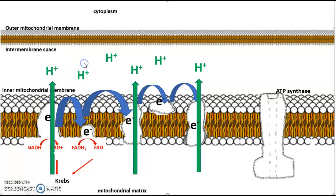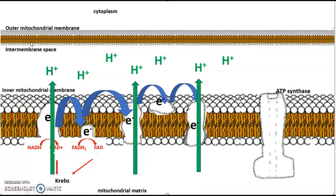With multiple glucose molecules being broken down, eventually you get a lot of hydrogens being pumped into the intermembrane space, forming a concentration gradient — high concentration in the intermembrane space and low concentration in the mitochondrial matrix. Both the inner and outer mitochondrial membranes are impermeable to hydrogen, so the only way hydrogen can flow down the concentration gradient back into the mitochondrial matrix is through the enzyme ATP synthase.